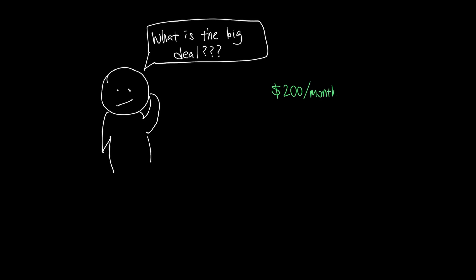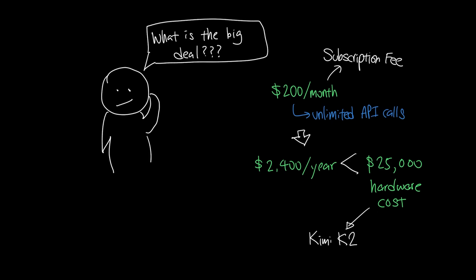Sure, the math still favors the commercial models because you only pay a subscription fee of $200 per month per developer to have unlimited API calls to use state-of-the-art models like Claude. That's only $2,400 per year, which is significantly less than paying $25,000 to run Kimi K2.